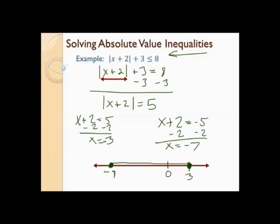So I'm going to highlight between the dots. Now I write the inequality with the variable in the middle, both inequalities pointing to the left in an 'and.' The smaller number goes on the left, the bigger number on the right: negative 7 is less than or equal to x is less than or equal to 3, including both endpoints because of the equal sign. And there's my graph.